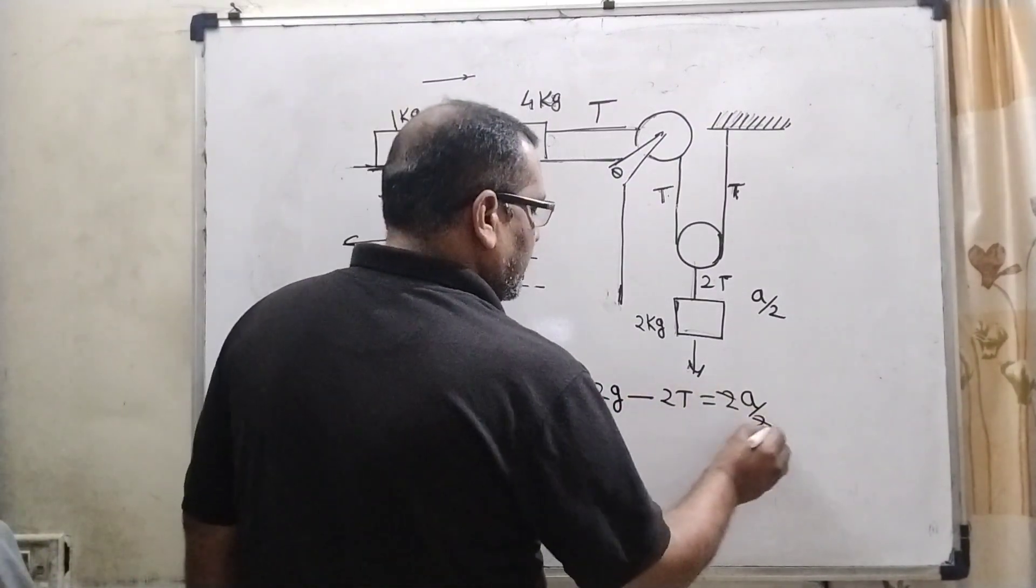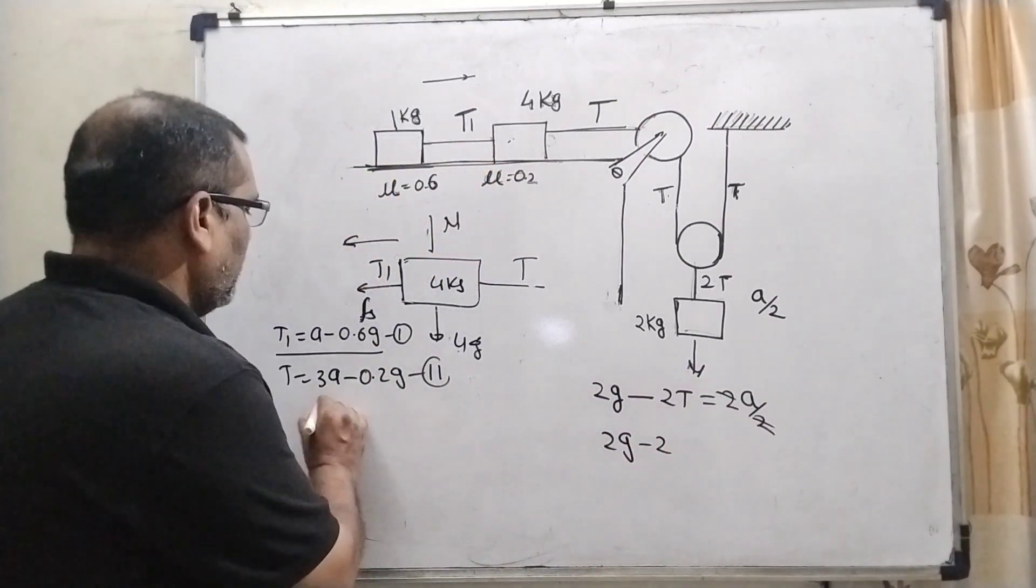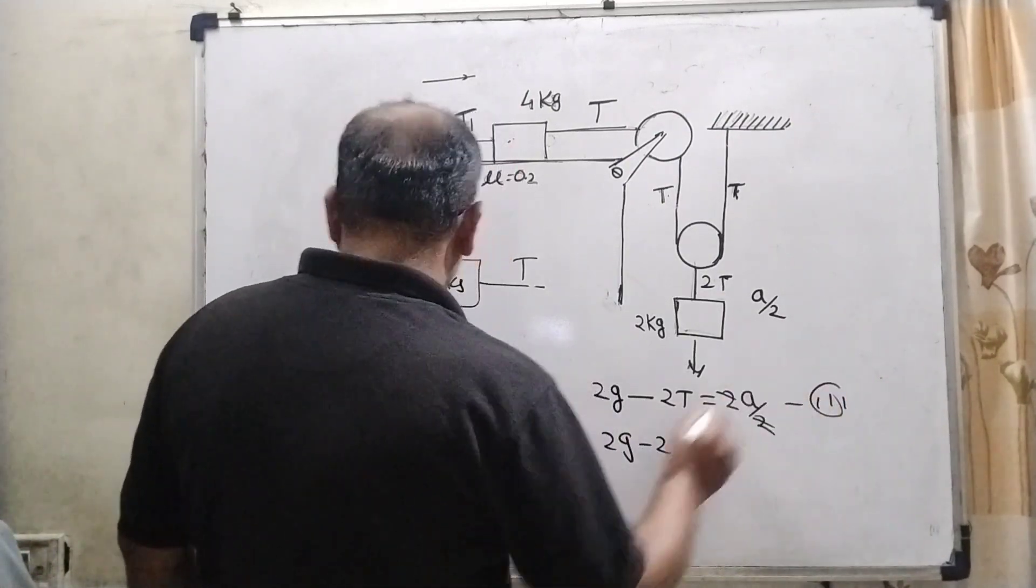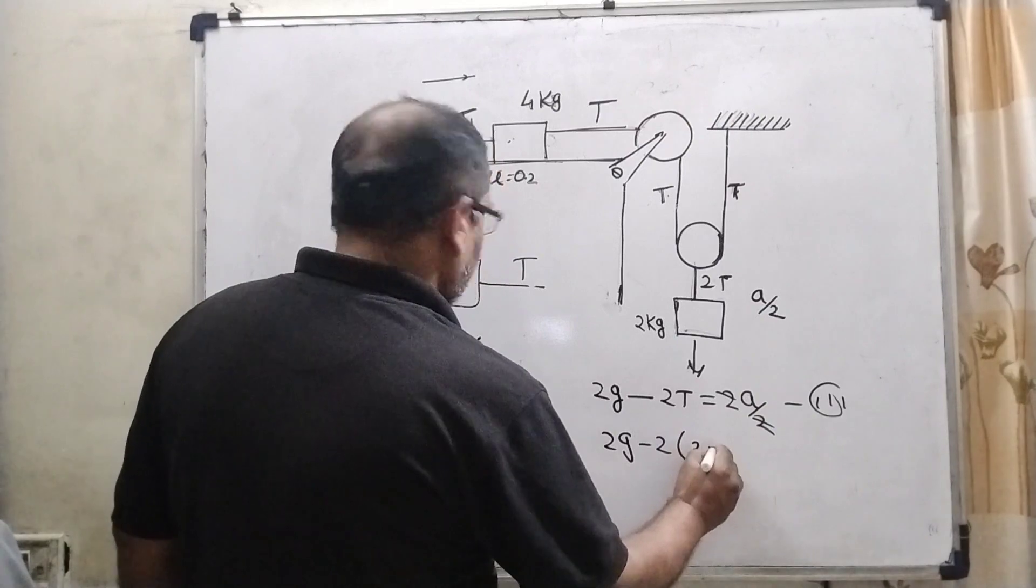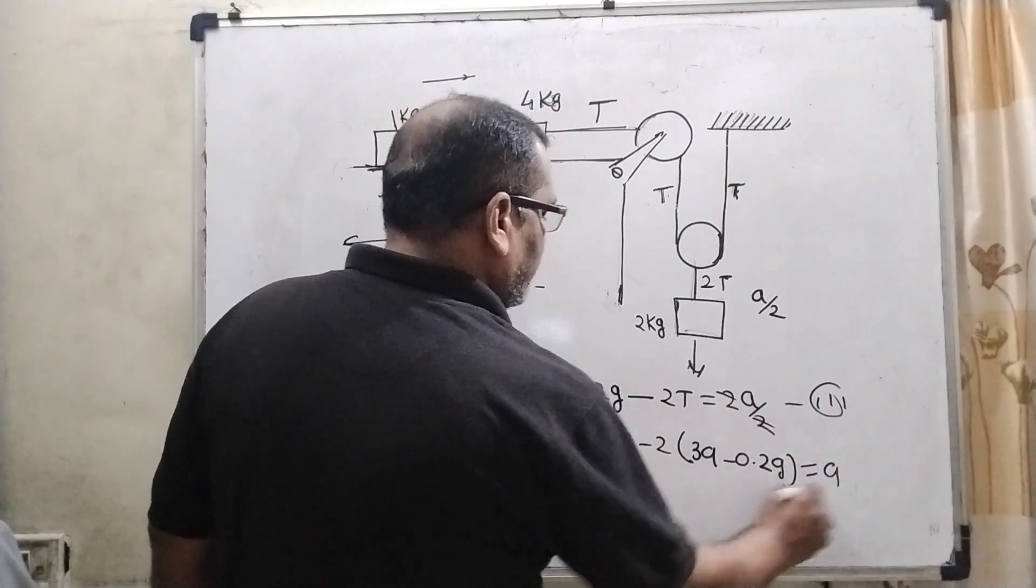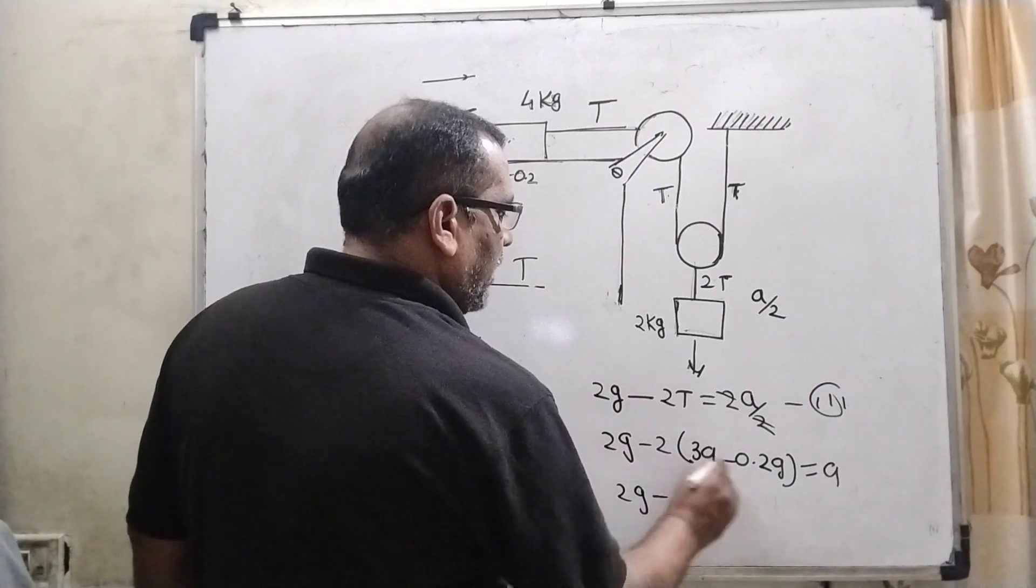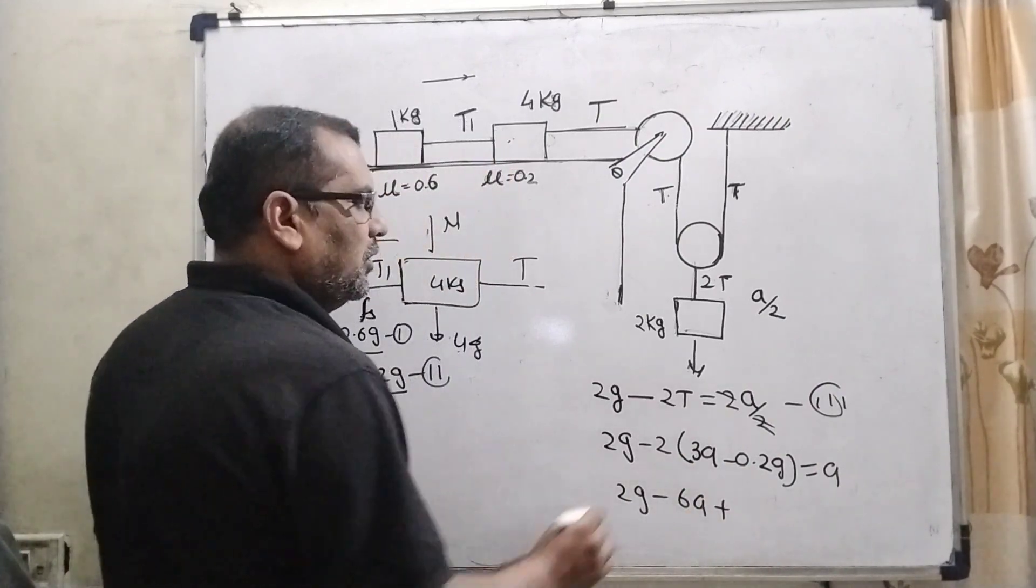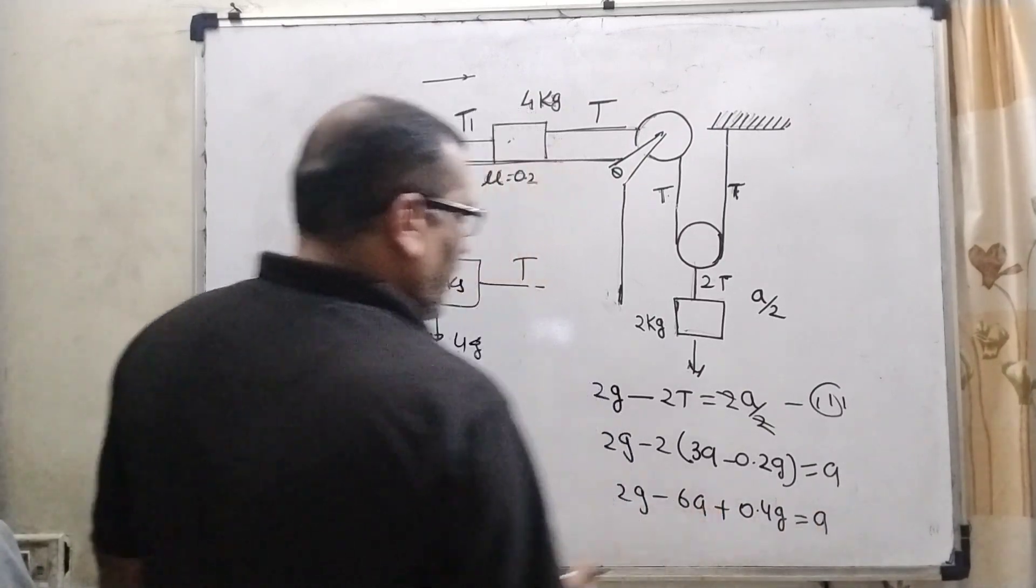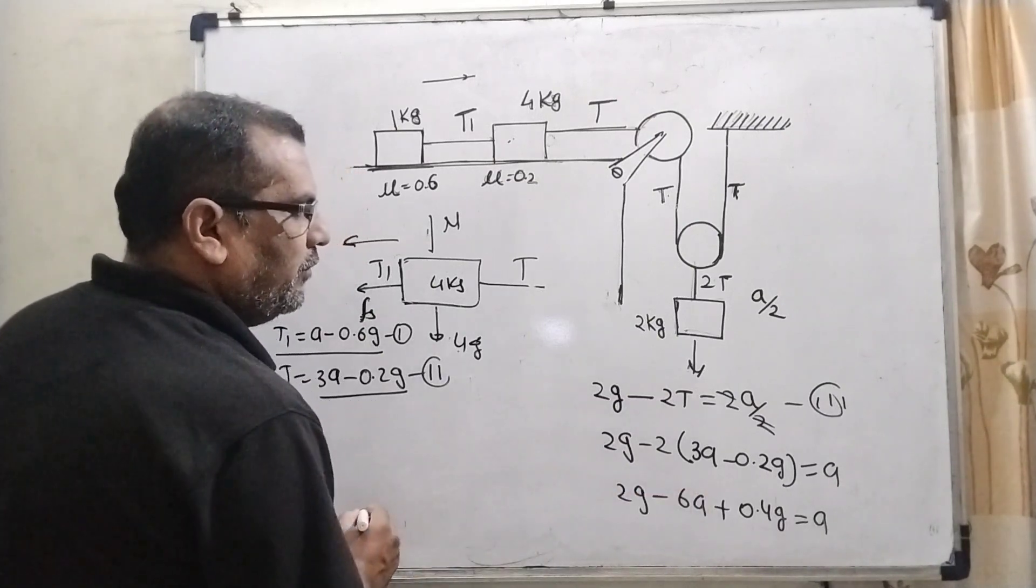So now 2 to cancel out 2g minus 2. Now substitute this value of T in equation motion number third. So 3a plus 0.2 is equal to here. Then 2g is equal to 6a minus minus plus 2t is causing mean 0.4 G equal to A.